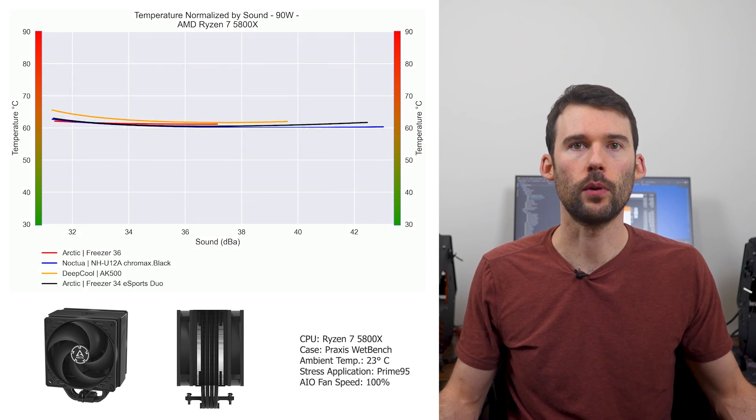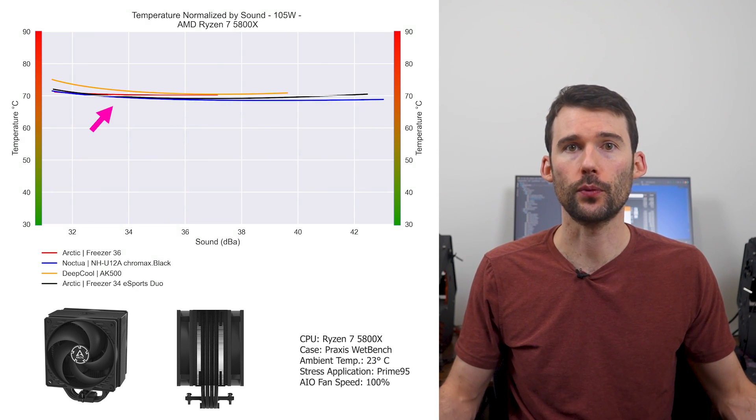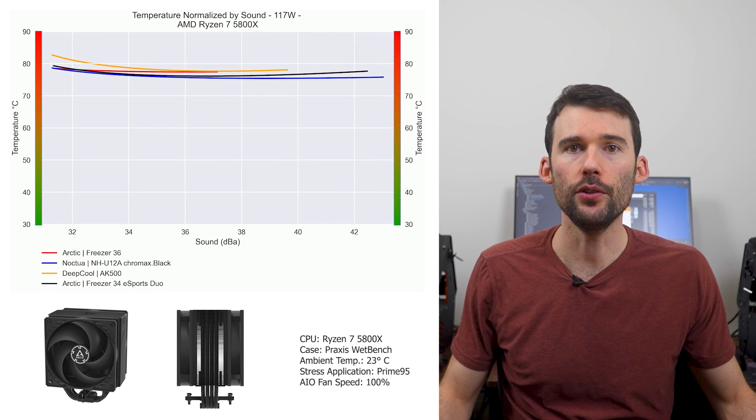And as we turn up the heat to 105 watts, we can see only minor temperature differences for a given noise level. And when we push the CPU to 130 watts, we can see that the Arctic Freezer 36 is only a few degrees higher for a given noise level above 34 decibels relative to the Noctua U12A and the Arctic Freezer 34 Esports Duo.